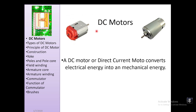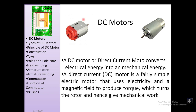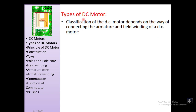DC motors come in different shapes and sizes. You may have seen them inside remote control cars, drones, or toys. A DC motor is a device that uses electricity and a magnetic field to produce torque, which rotates a shaft and provides mechanical work as the output.